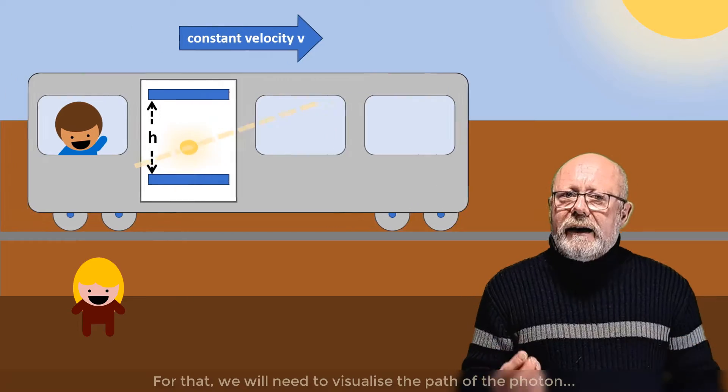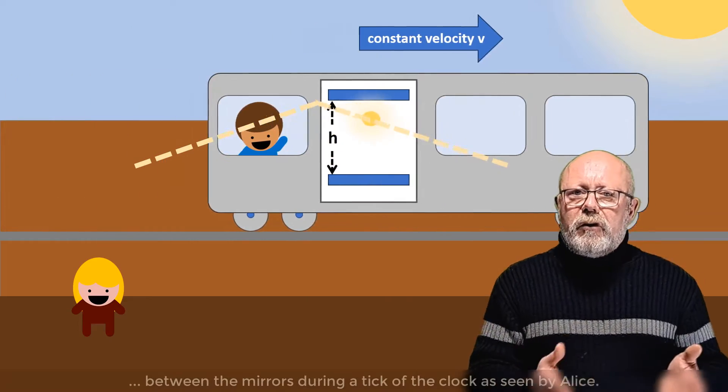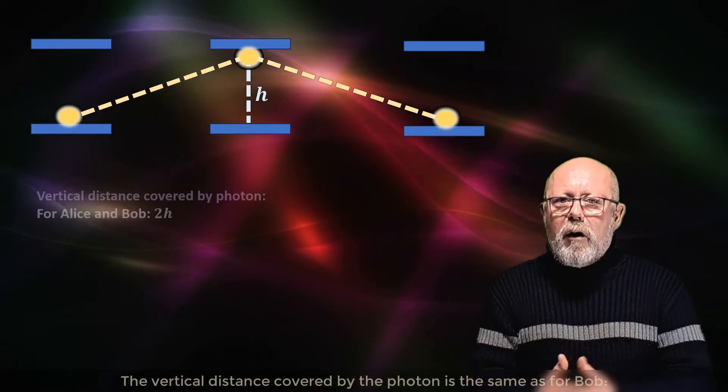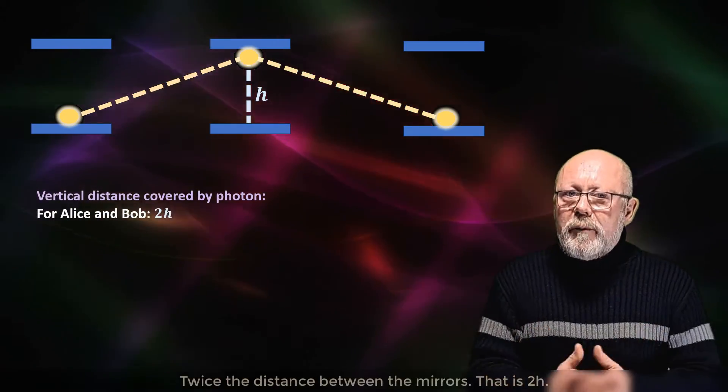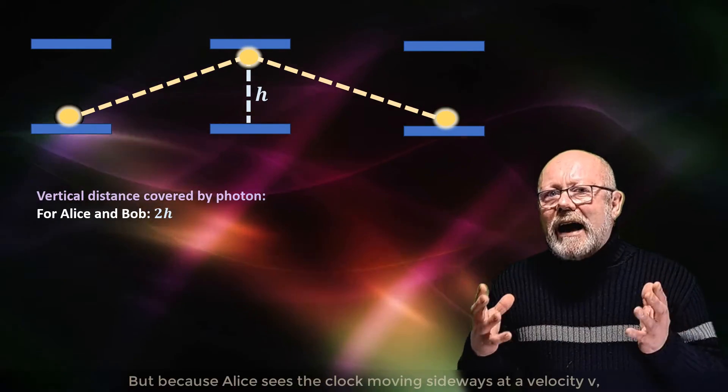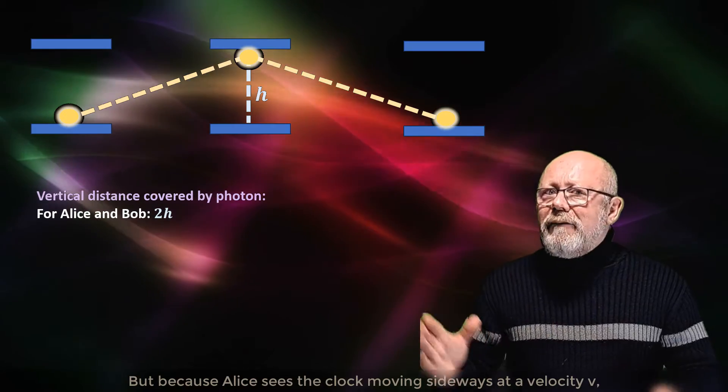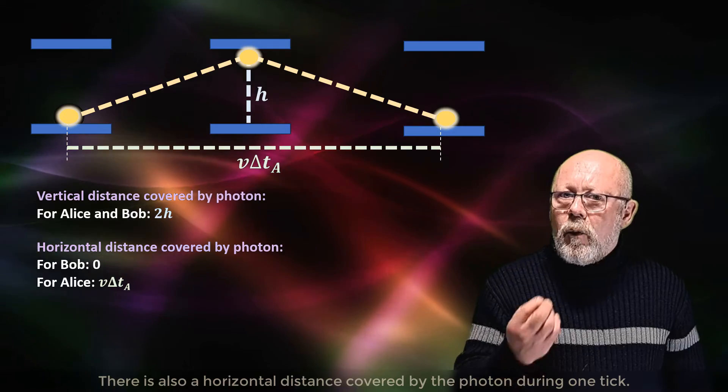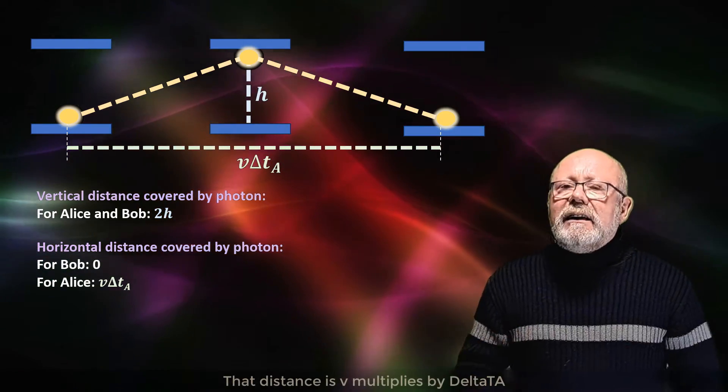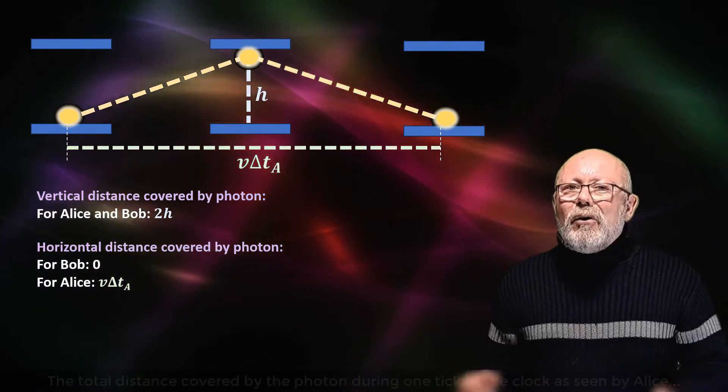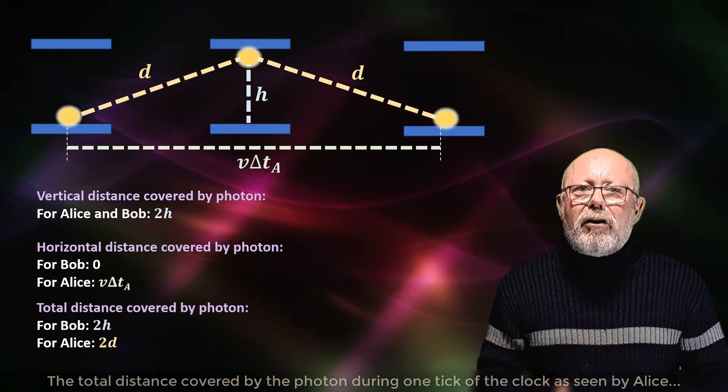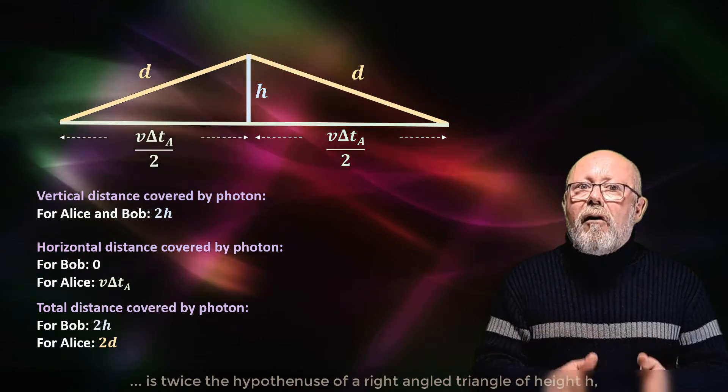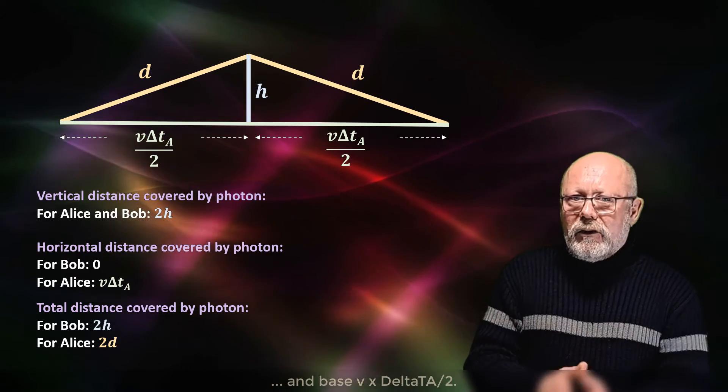For that, we will need to visualise the path of the photon between mirrors during a tick of the clock, as seen by Alice. The vertical distance covered by the photon is the same as for Bob, twice the distance between the mirrors, that is 2h. But because Alice sees the clock moving sideways at a velocity V, there is also a horizontal distance covered by the photon doing one tick. That distance is V multiplied by delta t_A. The total distance covered by a photon doing one tick of the clock, as seen by Alice,